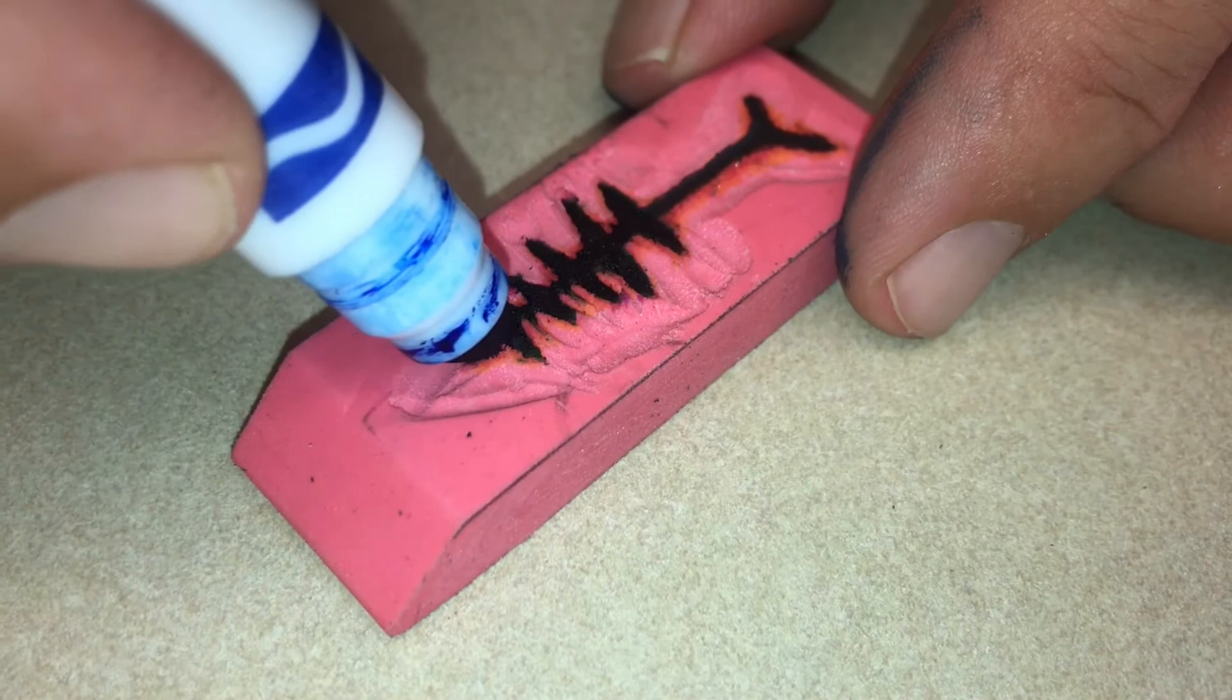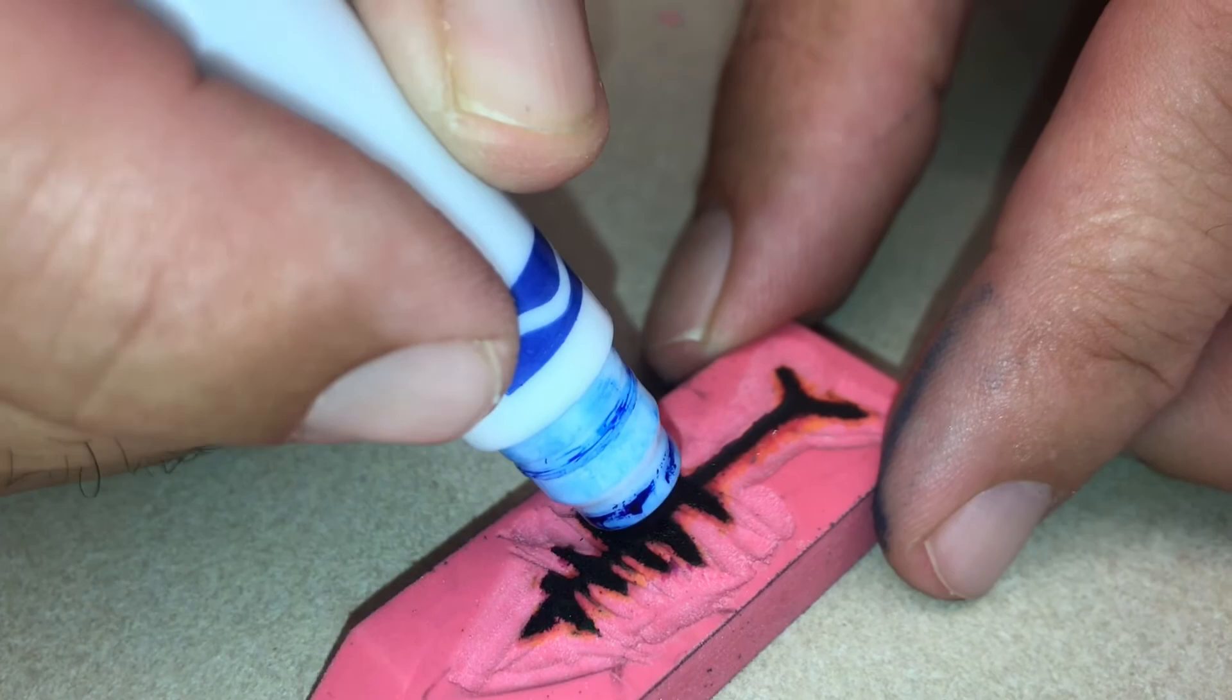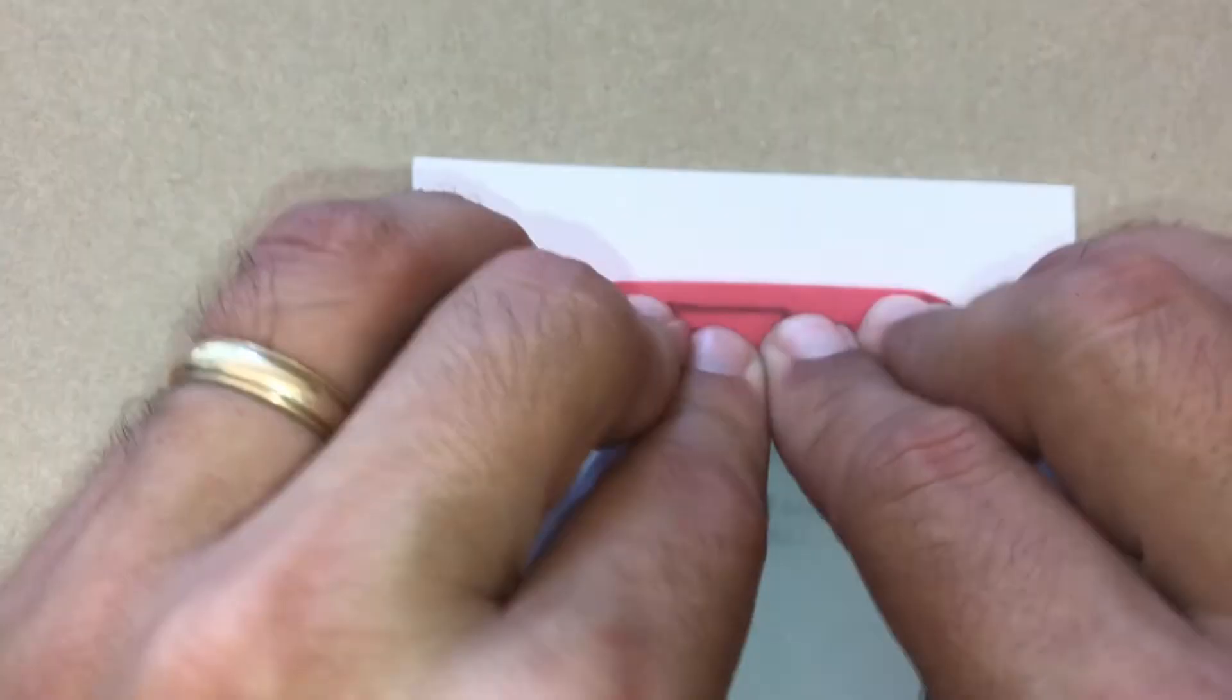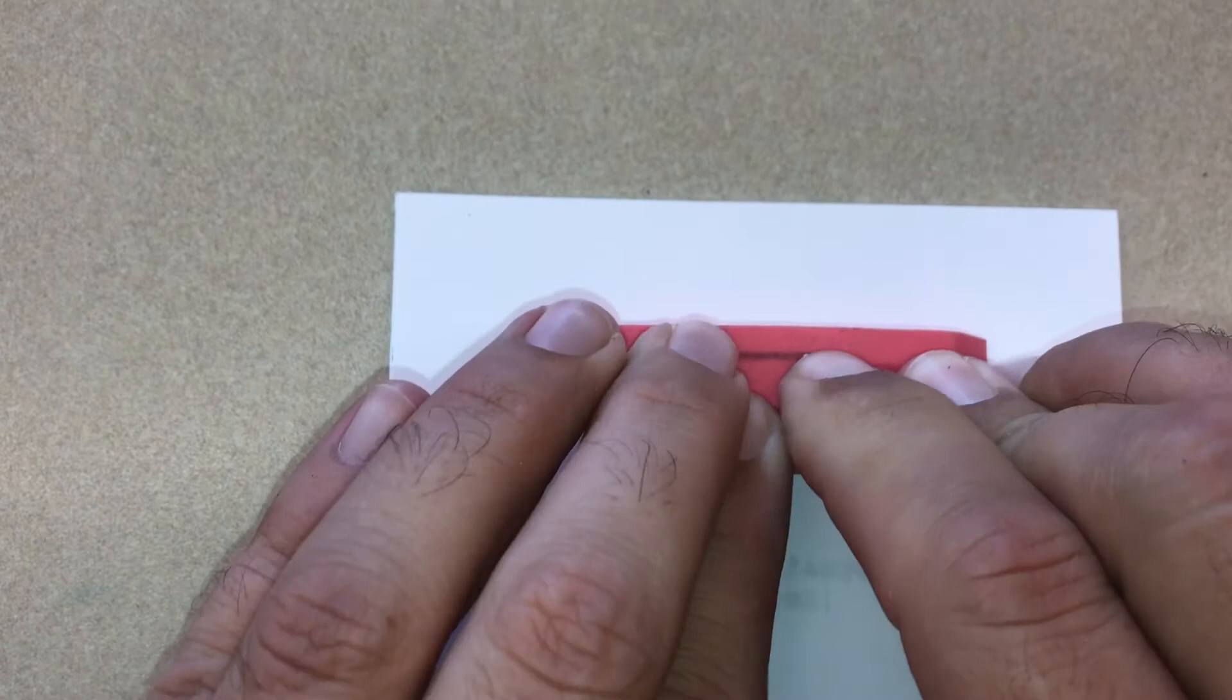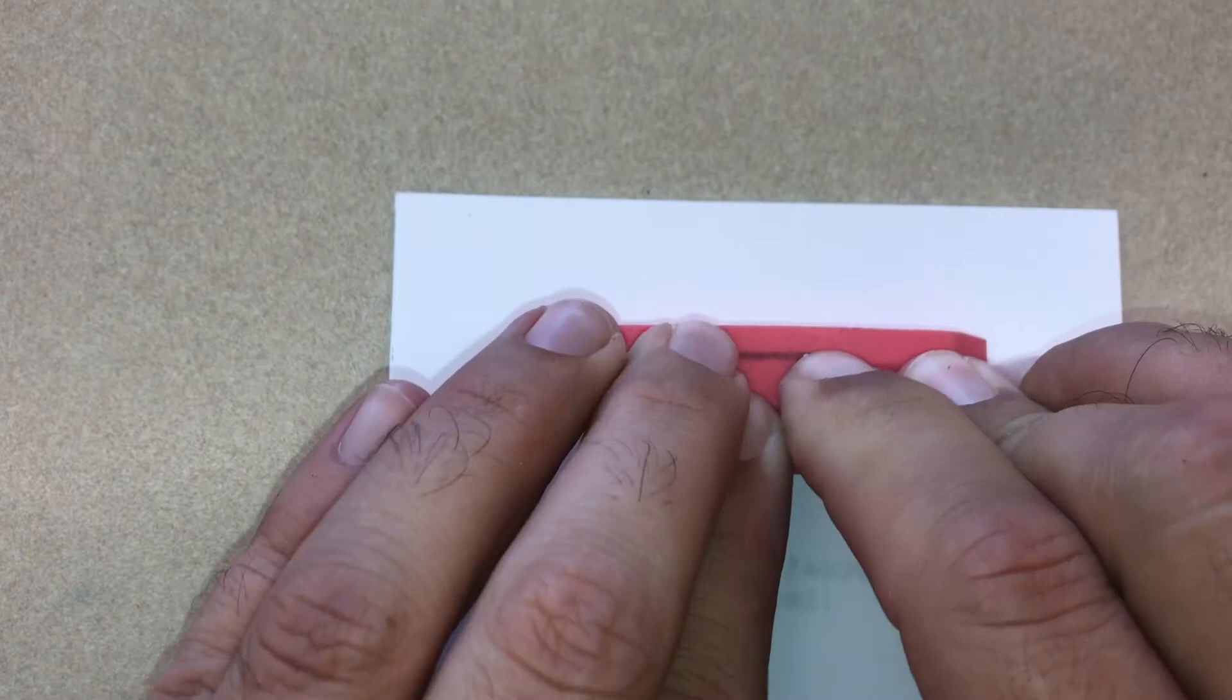Once you've made your initials, you can begin to experiment with different designs. Here's an example of two different styles of anvil that I did as a logo.